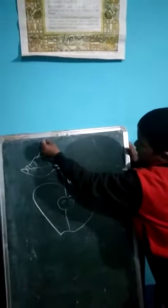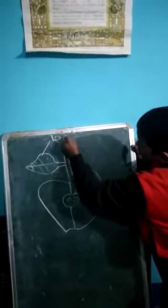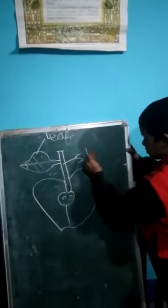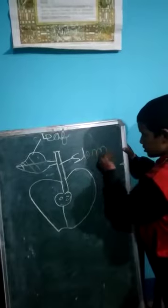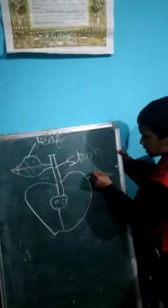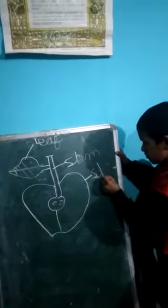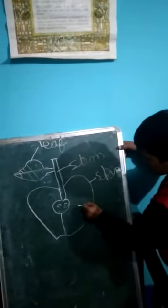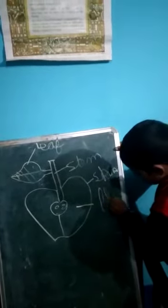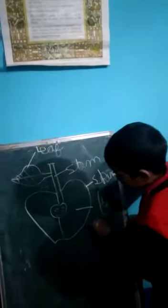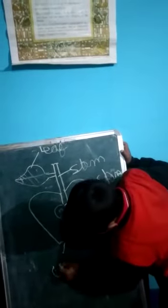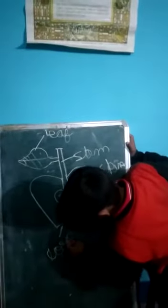First is leaf. Second is stem. Third is skin. Fourth is flesh — F-L-E-S-H. Fifth is core — C-O-R-E.